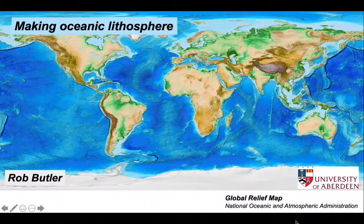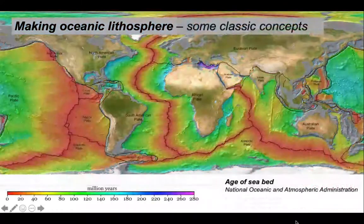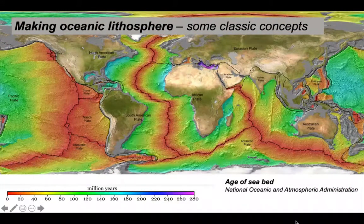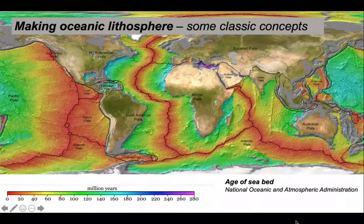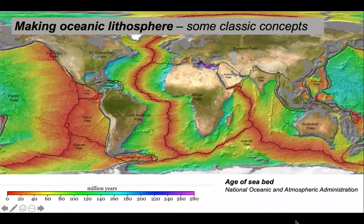So how is oceanic lithosphere made? On this map of the age of the seabed we can see that the youngest seafloor is concentrated along the mid-ocean ridges. This is where at least the crust is formed.